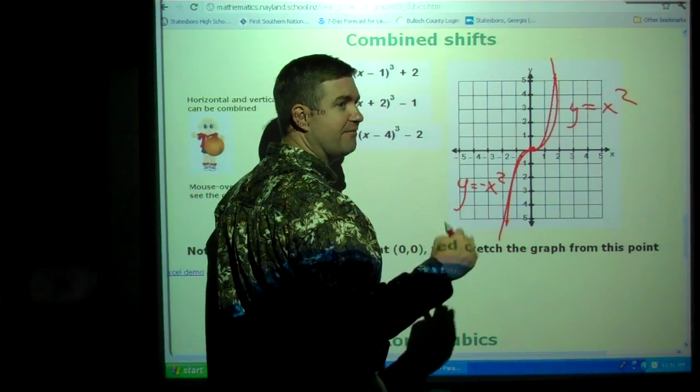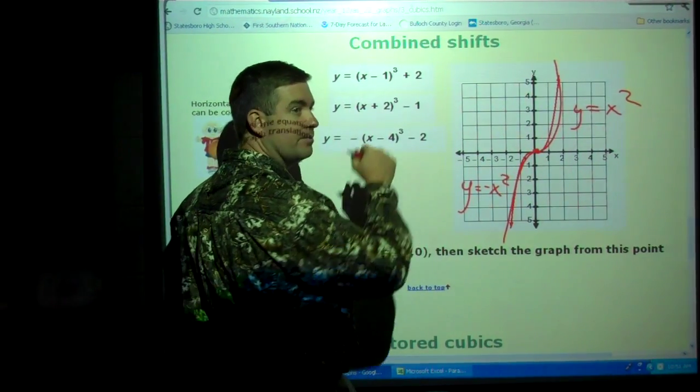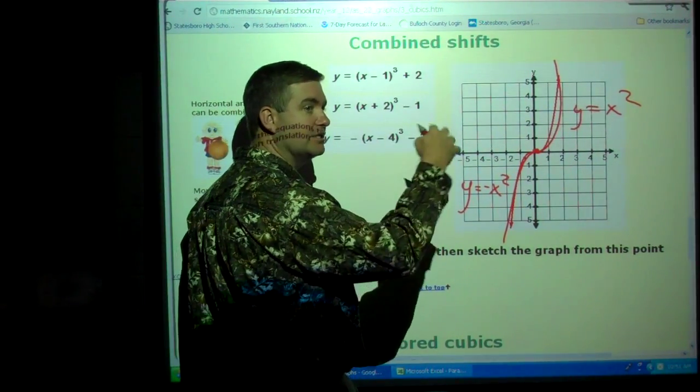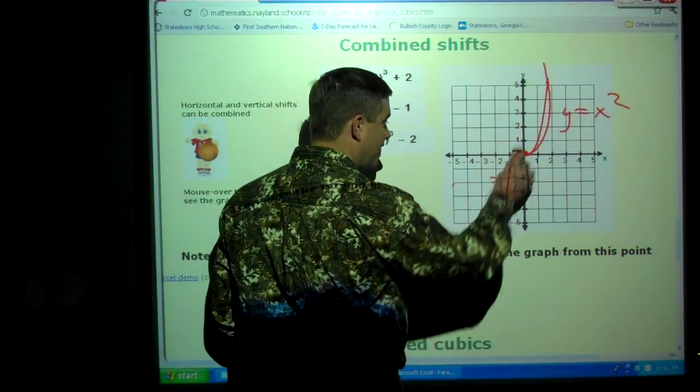Now if you wanted specific numbers, you would have to do a t-chart. You would have to plug in 1 and plug in 2 and plug in 3 and you'd get big numbers. But that would give you a more accurate graph.